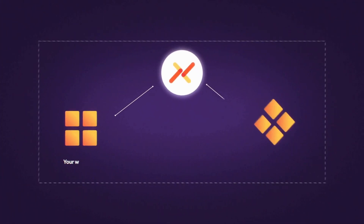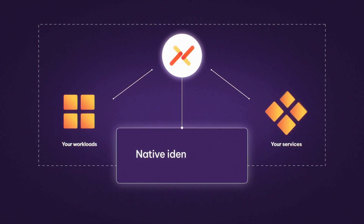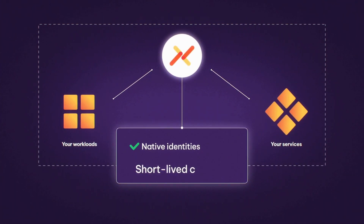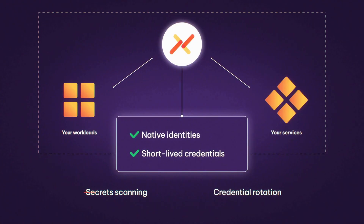Ambit discovers, enforces, and audits workload access. By using native identities and short-lived credentials, we eliminate the need for secret scanning and credential rotation. We let your teams focus on building your software without worrying about sharing API keys or misusing vaults.